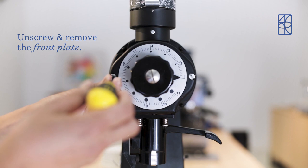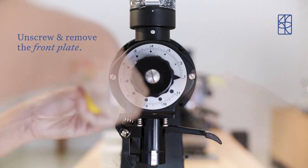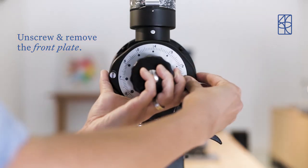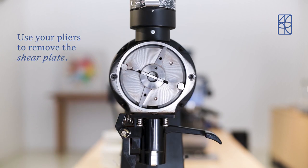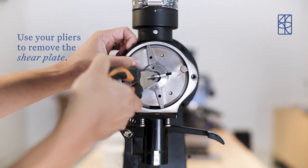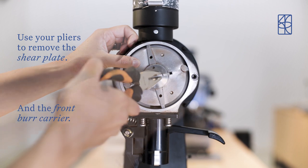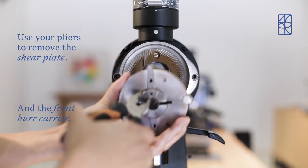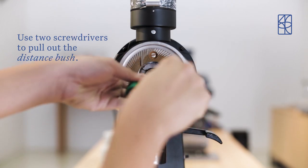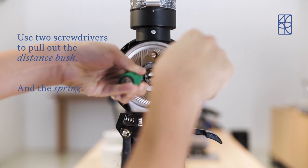Unscrew and remove the front plate. Use pliers to remove the shear plate and the front burr carrier. Use two screwdrivers to pull out the distance bush and the spring.